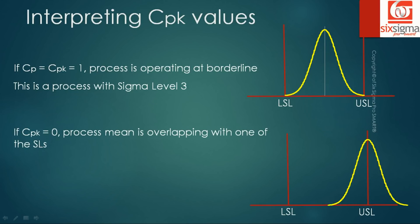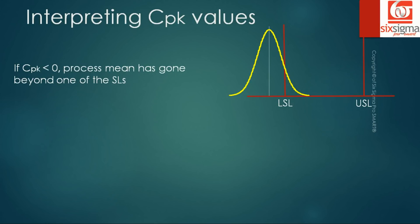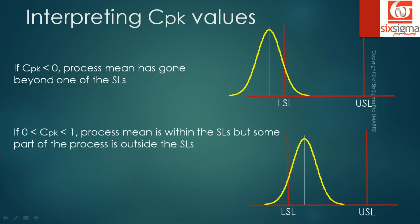If CPK equals zero, it means the process mean is overlapping with one of the specification limits. CPK is less than zero when the process mean has gone beyond the specification limits — either below the lower or above the upper specification limit. When CPK lies between zero and one, the process mean is still within the specification limits, but some portion of the process distribution has started going beyond the specification limits — the process is deteriorating.